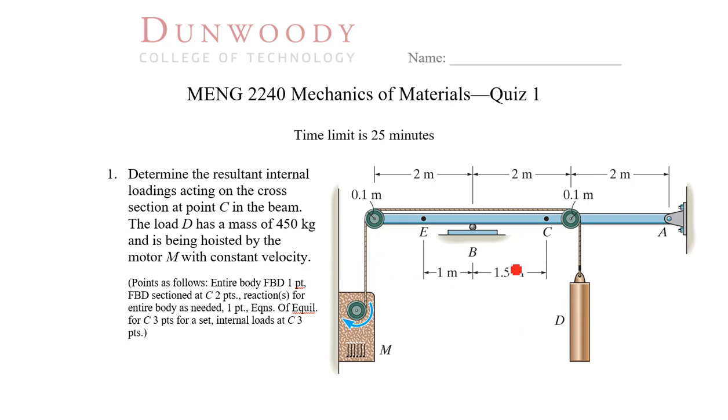And we are looking at this and we're looking to find the internal loadings at point C. So we're going to section this thing at point C here and find what our internal loads are. We're told what our load or mass D is. So D has 450 kilograms of mass. We'll have to find that's weight in a moment. And we're told that it's being hoisted by a motor M with constant velocity.